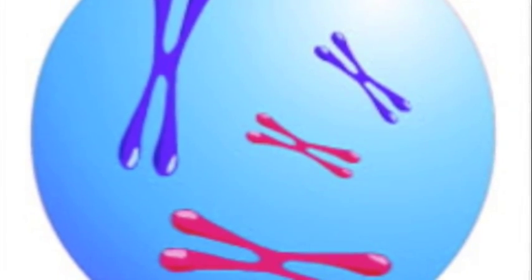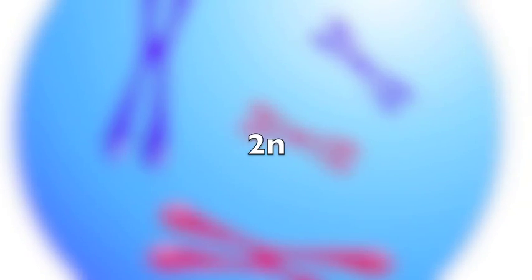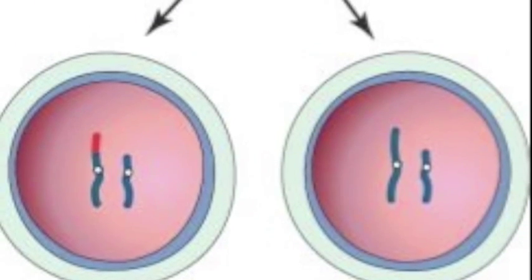Diploid is any cell with two sets of chromosomes, abbreviated 2N. A haploid cell is any cell containing a single chromosome set, abbreviated N.